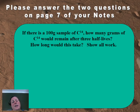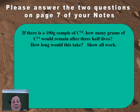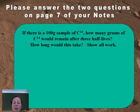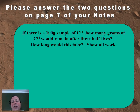Here's a typical problem working with carbon-14 or any other radioactive isotope. I'm going to show you the box method, which is a really simple way to learn how to do these problems. The question is: if there's a 100-gram sample of carbon-14, how many grams of carbon-14 remain after three half-lives? How long would this take? Show all work.